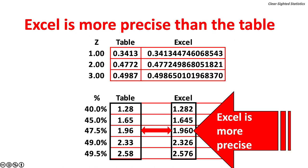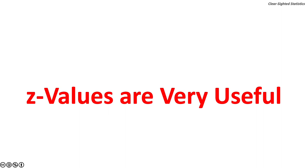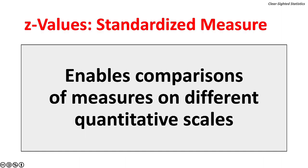Microsoft Excel provides more precise probabilities for z-values than found on the area under the curve table. This is because the area under the curve table only reports probabilities for z-values with two digits to the right of the decimal point, while Excel's calculations are based on 15 digits past the decimal point. Z-values are a very useful standardized measure, allowing us to compare variability of data measured with different units.